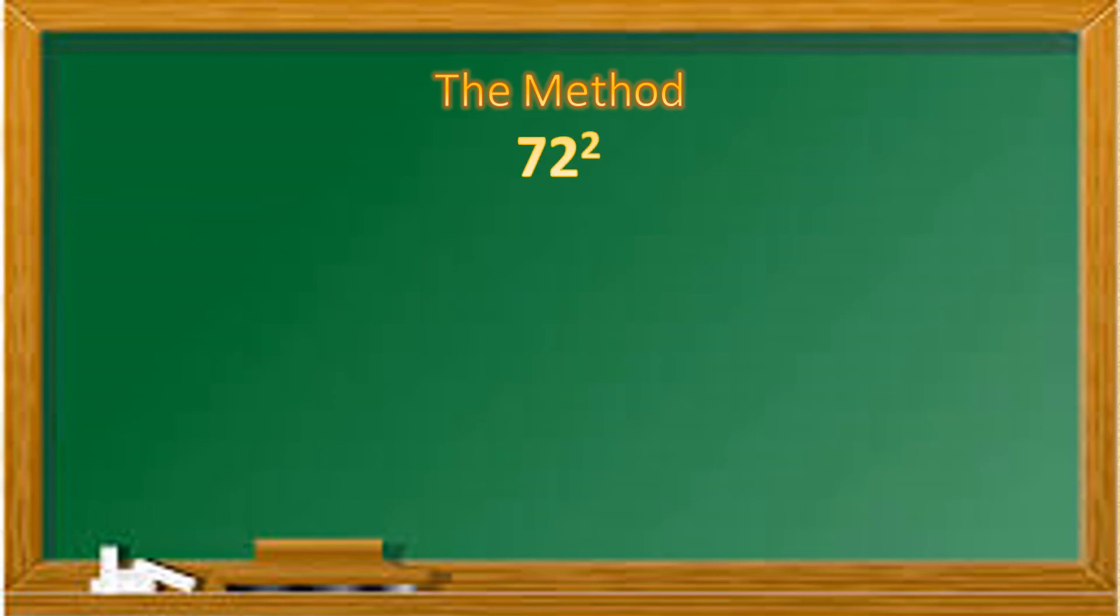Now is the time for the test. Please try on your own. To calculate the square of 72, what was our first number? Yes, you are right, it was 2500.